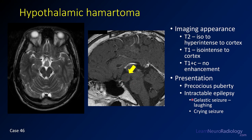The history you'll often see is a gelastic or laughing seizure, but that's not the most common presentation. The most common presentation is precocious puberty or early puberty. Patients can also get other seizures in this location. If you see a non-enhancing mass in this location, think hypothalamic hamartoma. Germinomas and craniopharyngiomas tend to be more heterogeneous and have more enhancement.